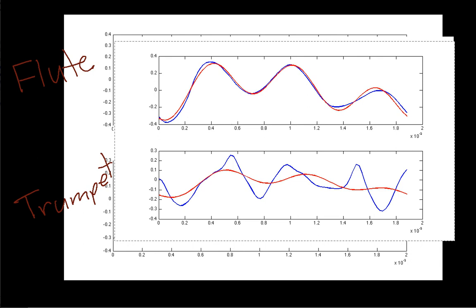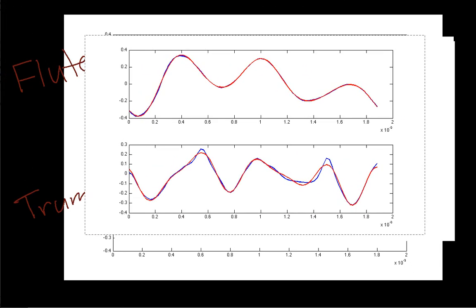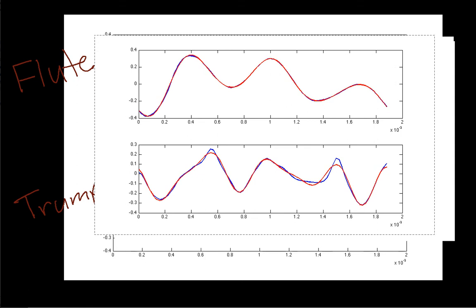The trumpet, on the other hand, doesn't look at all like it's being well reconstructed with just three harmonics. If I keep going and take the fundamental frequency plus the second, third, fourth, fifth, and sixth harmonics, then I get something that approximates the trumpet fairly well too.